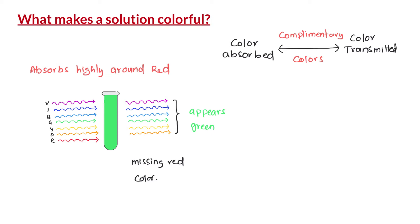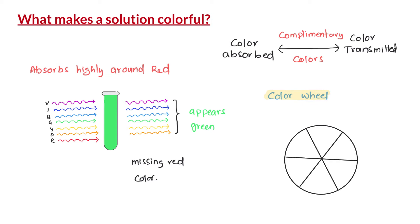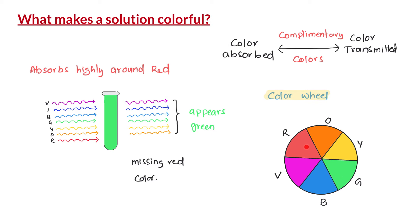A list of all complementary colors can be remembered by drawing a color wheel. We draw a circle and divide it into six equal parts, then assign one color of the visible spectrum to each part, leaving out indigo: violet, blue, green, yellow, orange, red. This color wheel gives the relation between the color absorbed and the color transmitted, which are on opposite sides of the circle. For example, blue and orange are complementary colors, and red and green are complementary colors. Leaves look green because they absorb their complementary color, which is red.